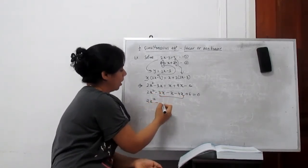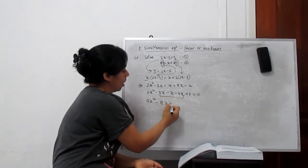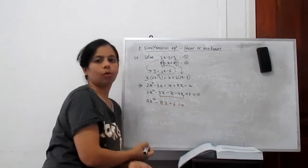All x terms should be combined. 2x squared minus 8x plus 6 equals 0. Clear?